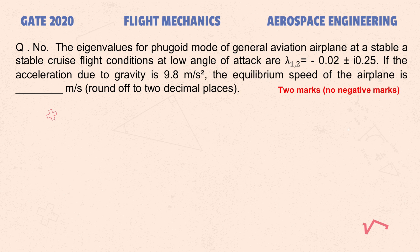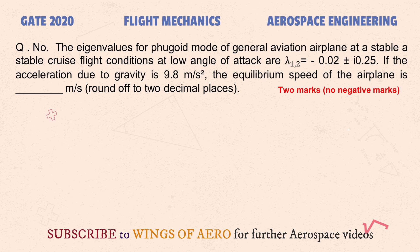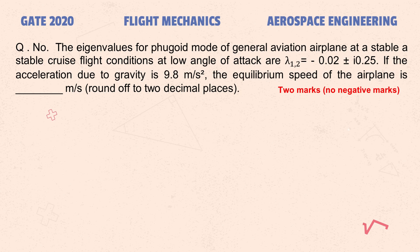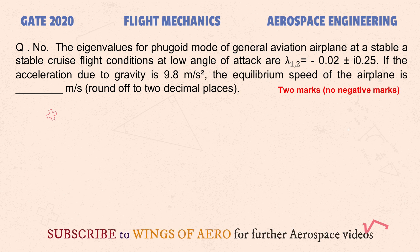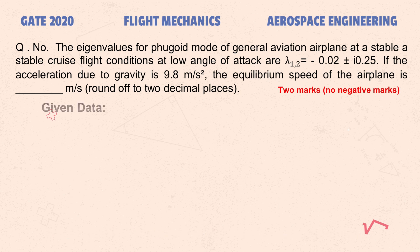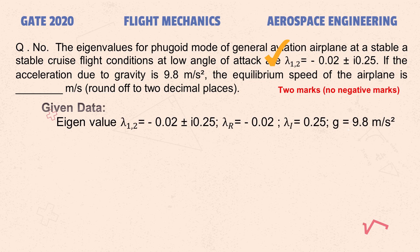Third question: the eigenvalues for the phugoid mode of a general aviation airplane at a stable cruise flight condition at low level angle of attack are lambda_1,2 = −0.02 ± i·0.25. If acceleration due to gravity is 9.8 m/s², find the equilibrium speed of the airplane in meters per second, rounded to two decimal places. This question carries two marks with no negative marking. The real eigenvalue is lambda_r = −0.02 and the imaginary eigenvalue is lambda_i = 0.25.